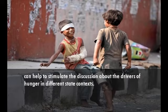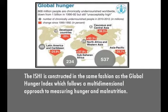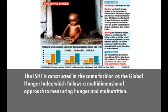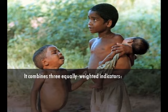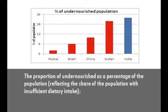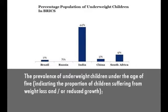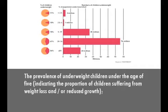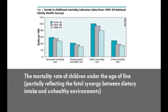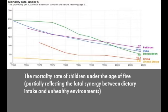In addition, the variability of the relative contribution of the underlying components of the hunger index across the different Indian states can help to stimulate discussion about the drivers of hunger in different state contexts. The ISHI is constructed in the same fashion as the Global Hunger Index, which follows a multidimensional approach to measuring hunger and malnutrition. It combines three equally weighted indicators: the proportion of undernourished as a percentage of the population, reflecting the share of the population with insufficient dietary intake; the prevalence of underweight children under the age of five, indicating the proportion of children suffering from weight loss or reduced growth; and the mortality rate of children under the age of five, partially reflecting the fatal synergy between dietary intake and unhealthy environments.